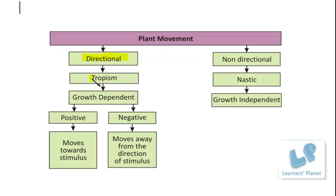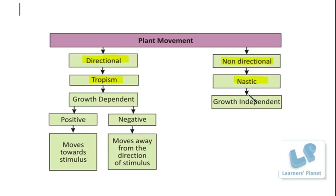Such directional plant movements are known as tropic movements, and the phenomenon is known as tropism. Then the next type, as I said, is non-directional. Non-directional means it is not having a particular direction — that means it is independent of the direction from where the stimulus is exposed. The movement does take place, but it is not with respect to the direction of the stimulus. Such plant movements taking place in a non-directional manner are known as nastic movement, and the phenomenon is known as nastism.